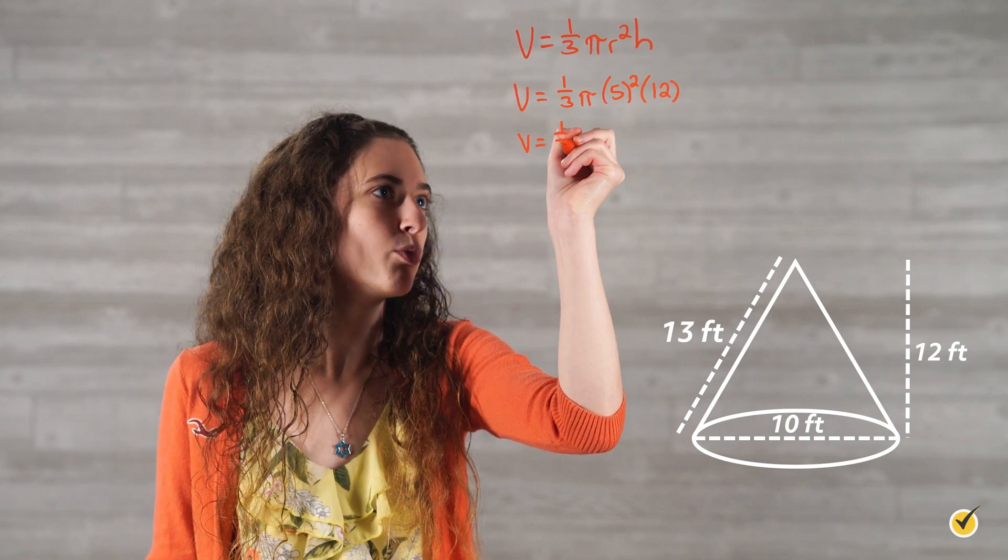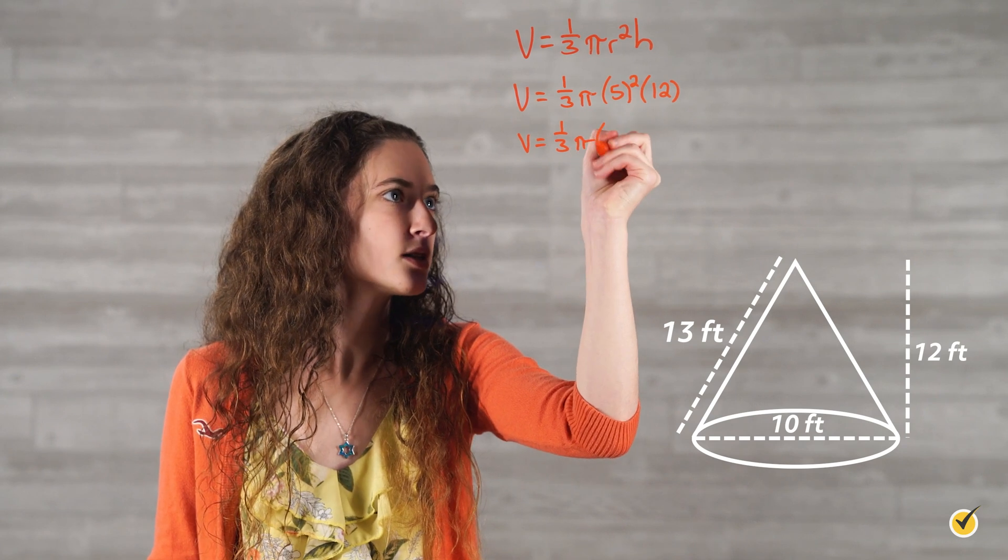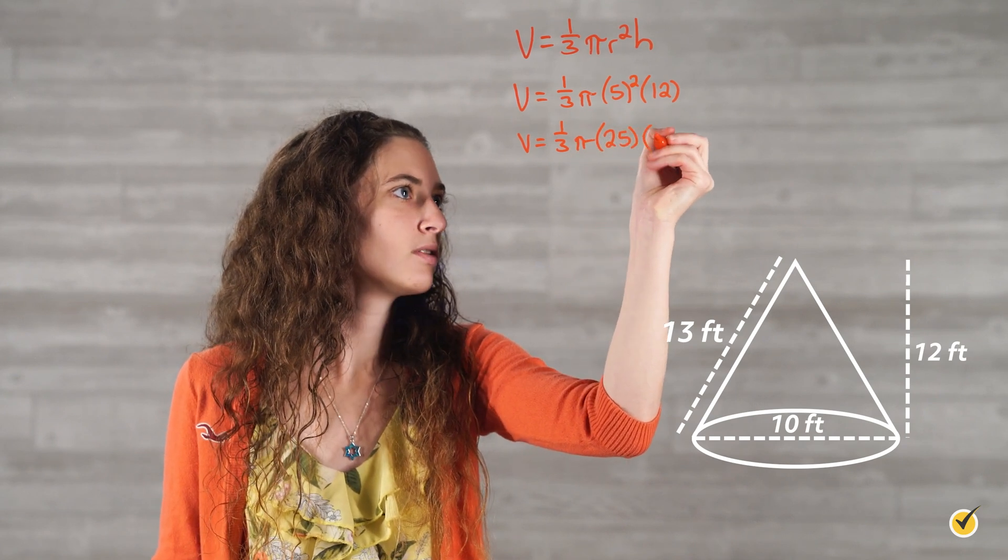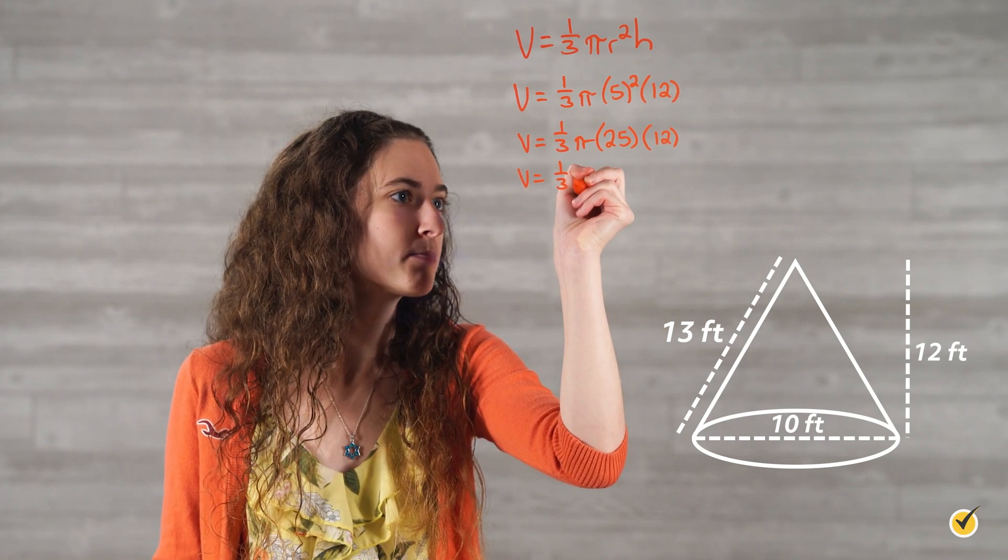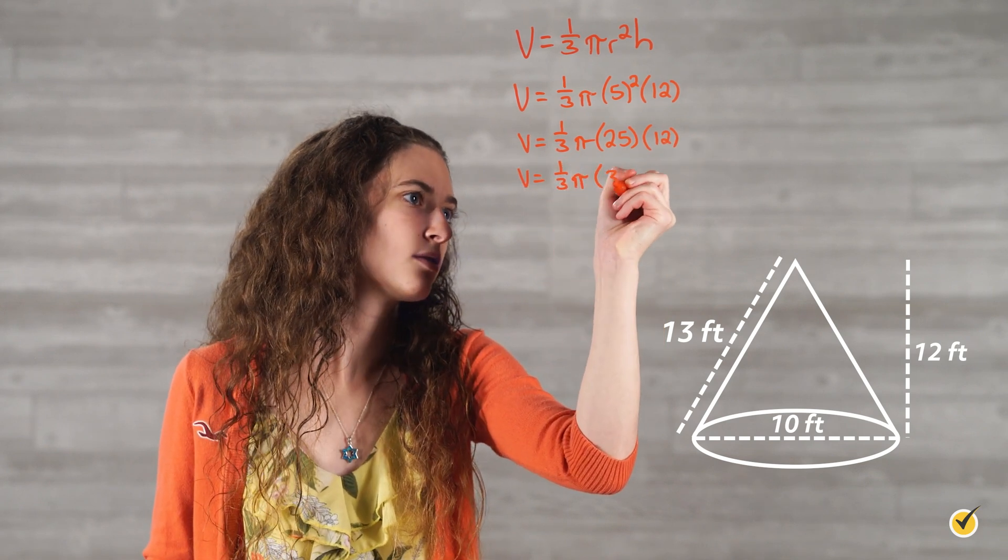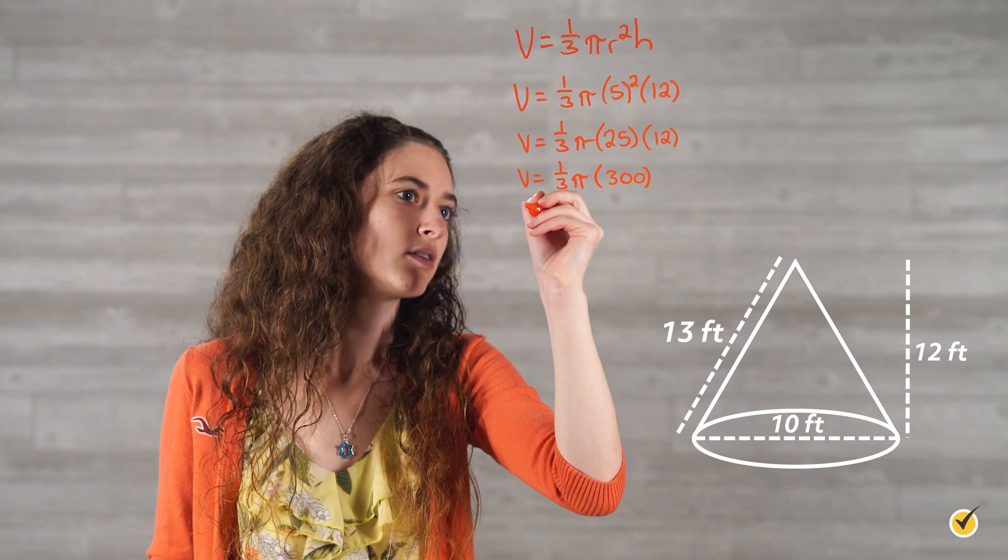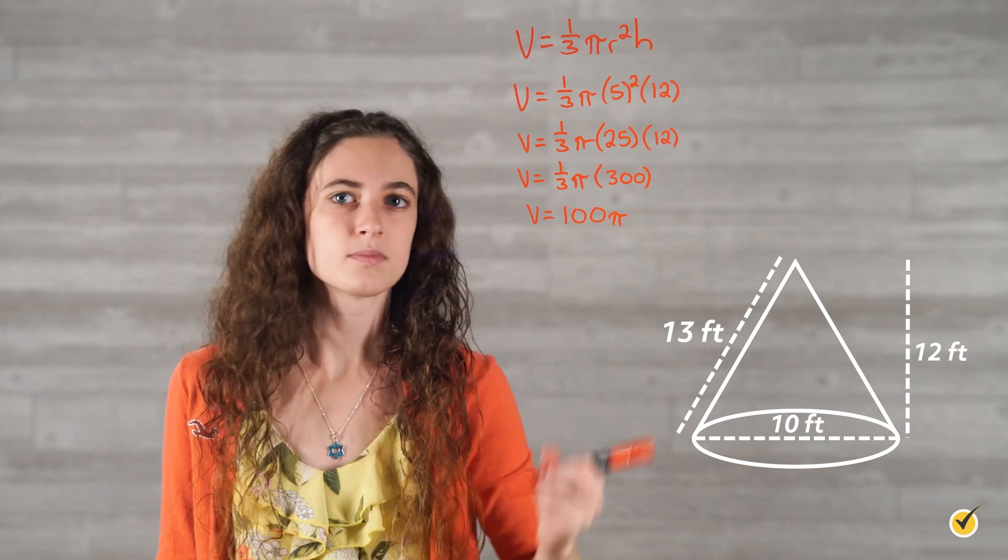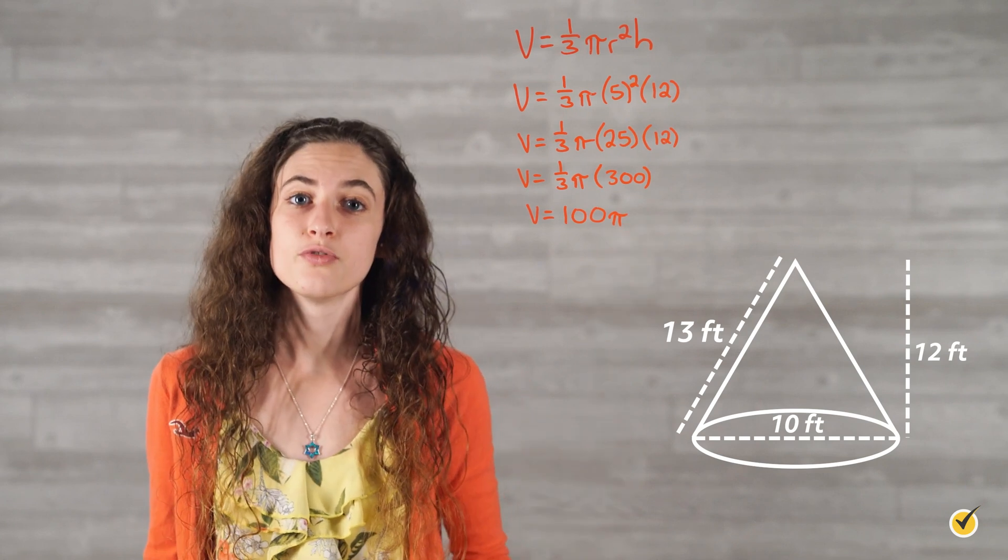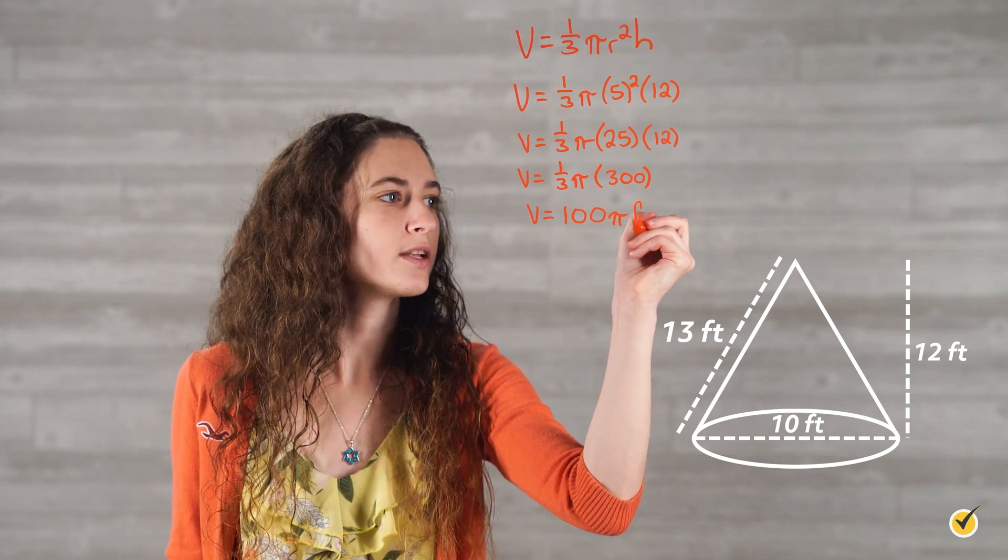Which is equal to one-third pi times 25 times 12, or one-third pi times 300, which equals 100 pi. So, the volume is 100 pi cubic feet.